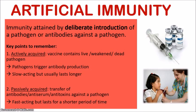With passively acquired artificial immunity, you are actually receiving the antibodies, anti-serum, or anti-toxins against the pathogen — usually in the form of an injection. A perfect example is someone who gets a tetanus shot. If you step on a rusty nail and need immediate protection against tetanus, you would go and get an injection containing the antibodies to fight off the pathogen quickly. The key characteristic of passively acquired artificial immunity is that it is very fast acting, but it only lasts for a short period of time.